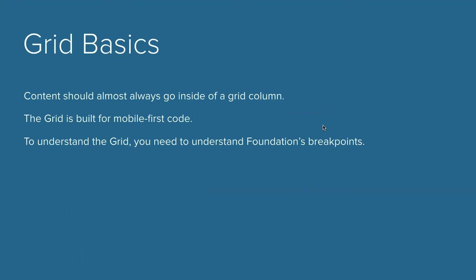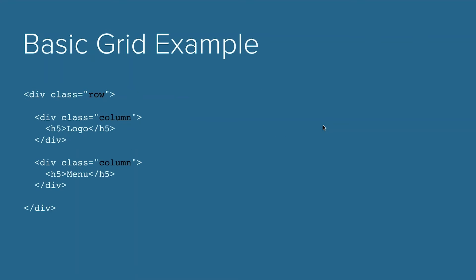So the grid basics: any content should almost always go inside a grid column. There may be a few exceptions — maybe if you've got something that's fixed or absolutely positioned — but in most cases, 90% or even 99% of cases, you're going to want your content inside a grid column. The grid is built for mobile-first code, so to understand it you need to understand Foundation's breakpoints. Here's a basic grid example illustrating the point in concrete code.